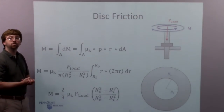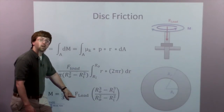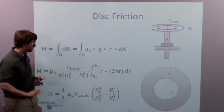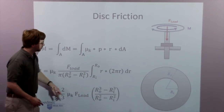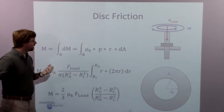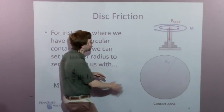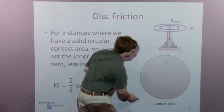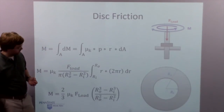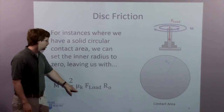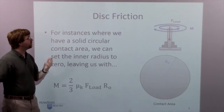The moment lost due to friction forces is M = (2/3) · μ_k · F · (R_outer³ − R_inner³) / (R_outer² − R_inner²), where μ_k is the kinetic coefficient of friction, F is the load force pressing the collar into the surface, and R_outer and R_inner are the outer and inner radii of the collar. For a solid circular contact area like an end bearing, set the inner radius to zero, and the equation reduces to M = (2/3) · μ_k · F · R_outer. That's all for thrust bearings; next we move on to disc brakes.